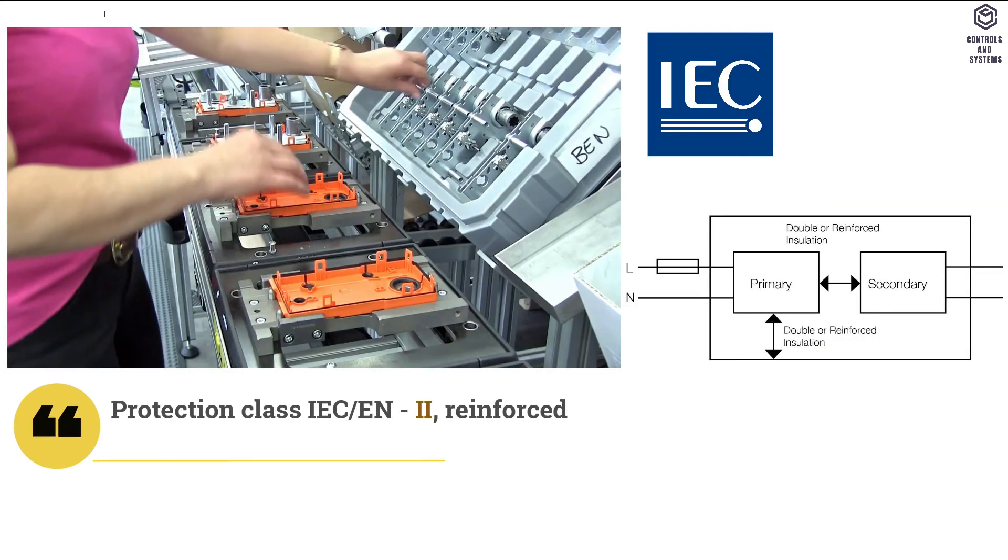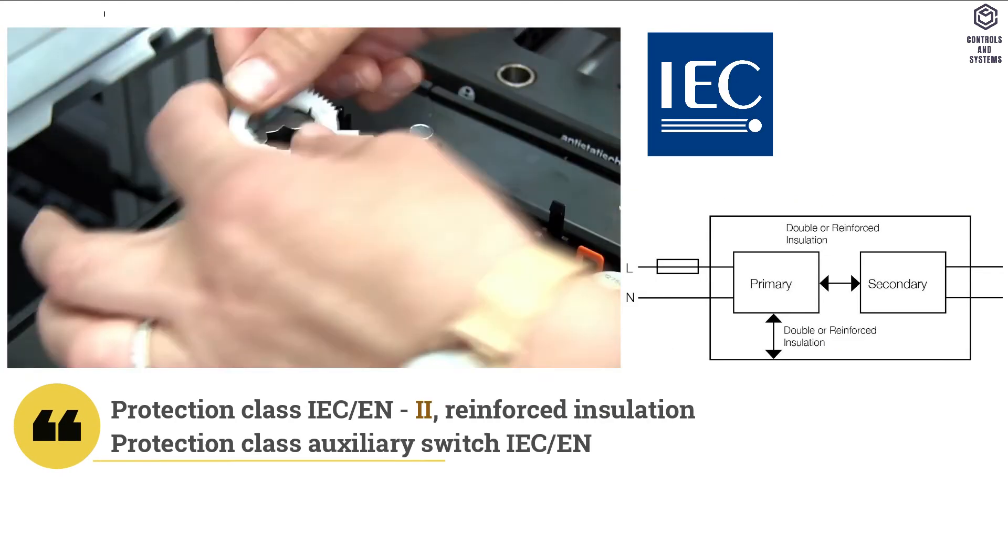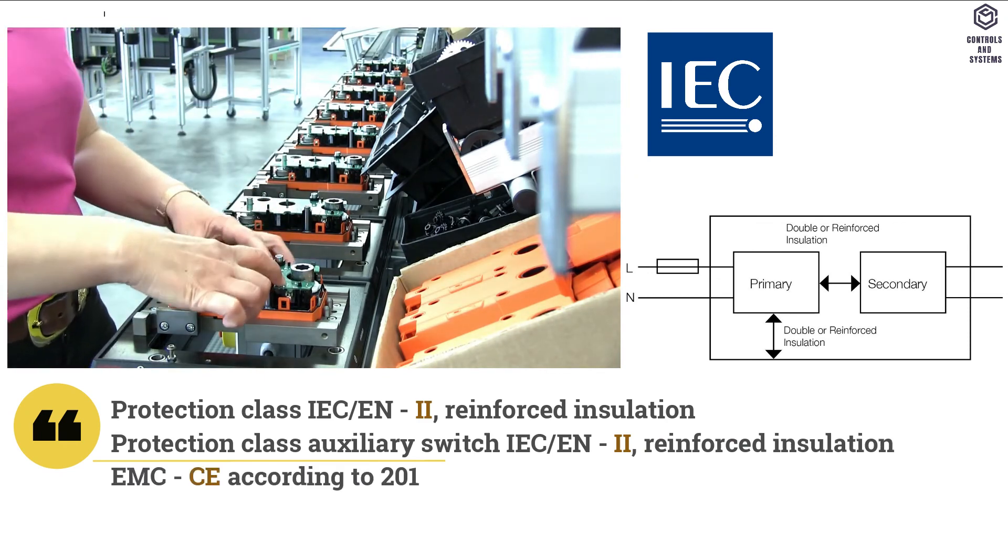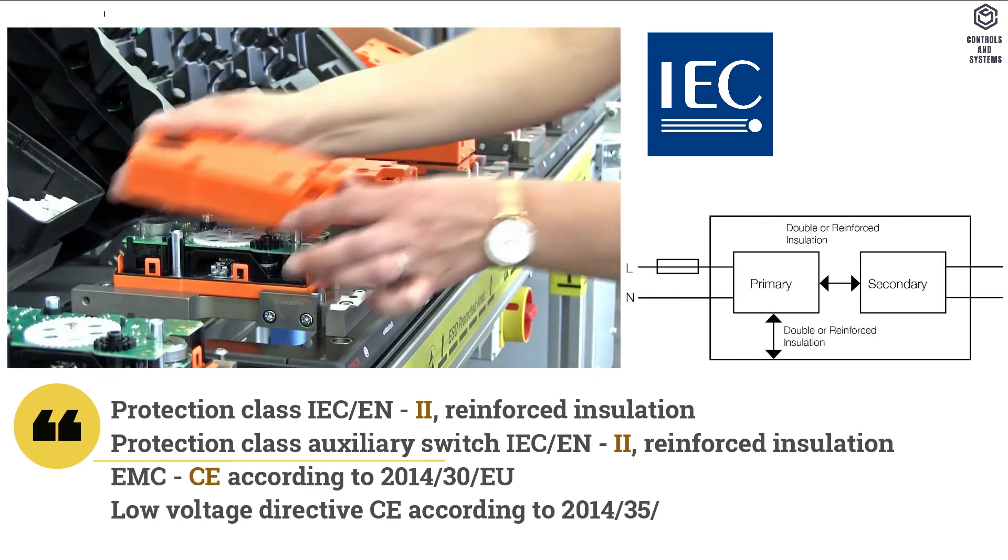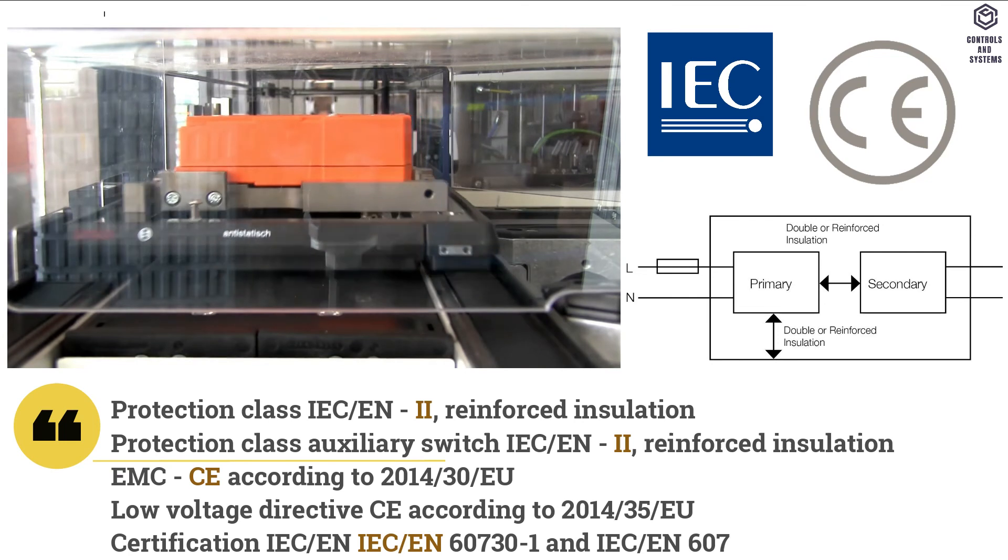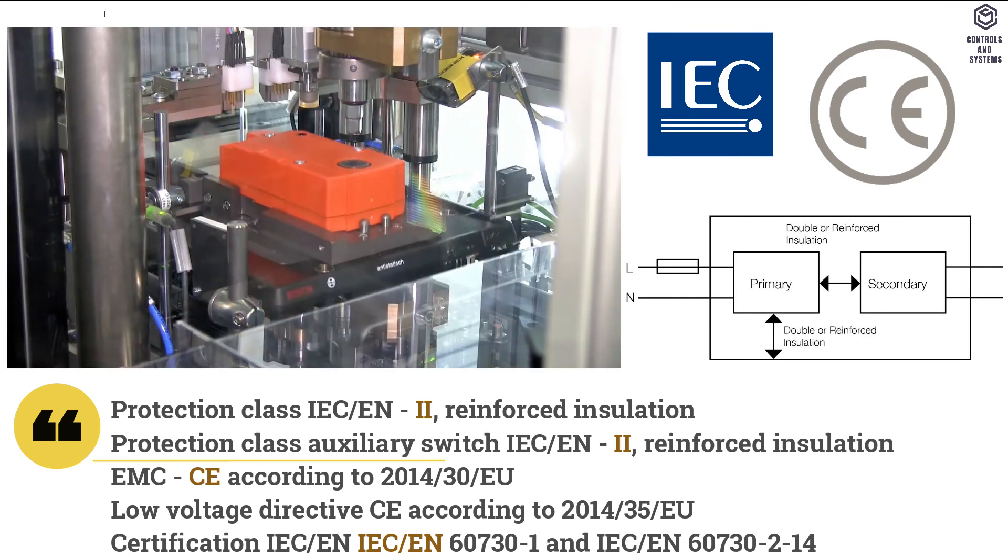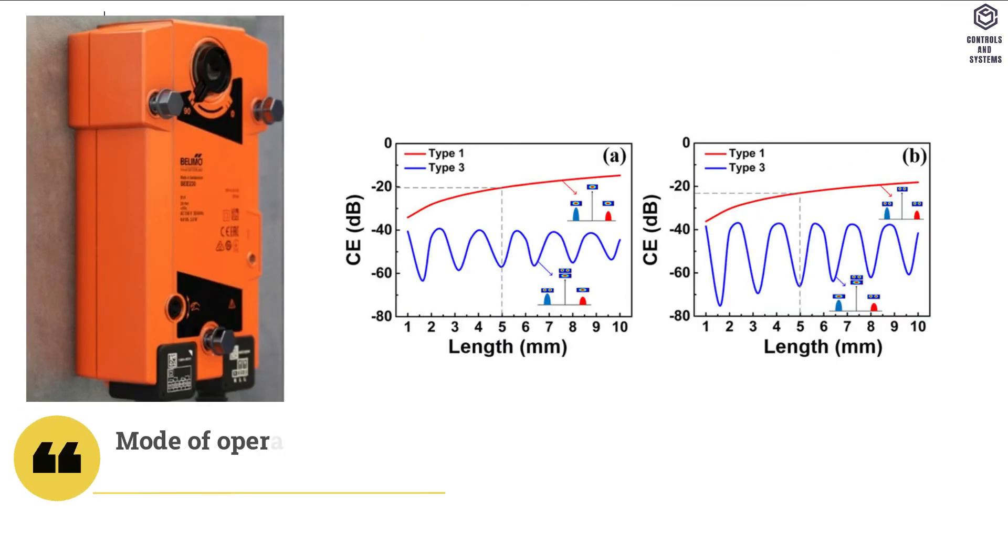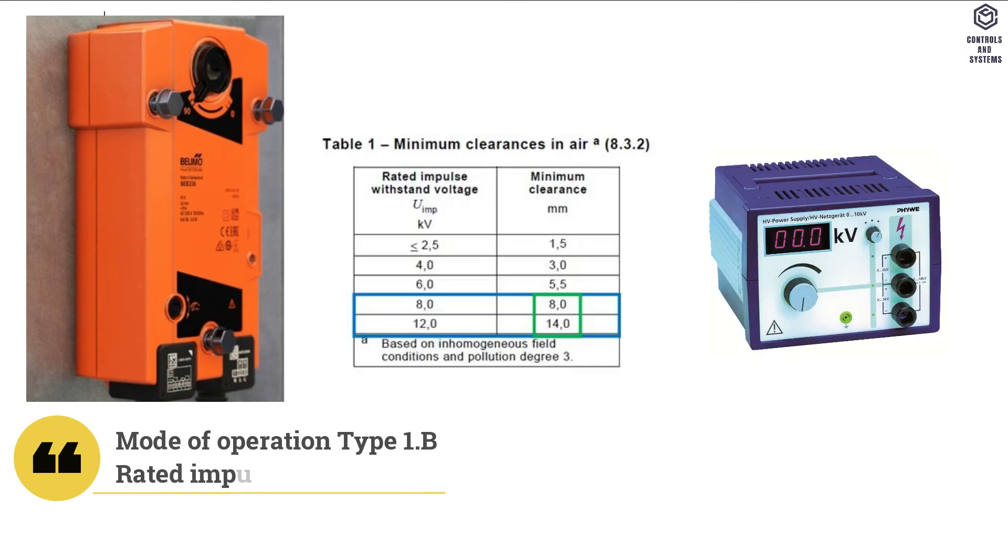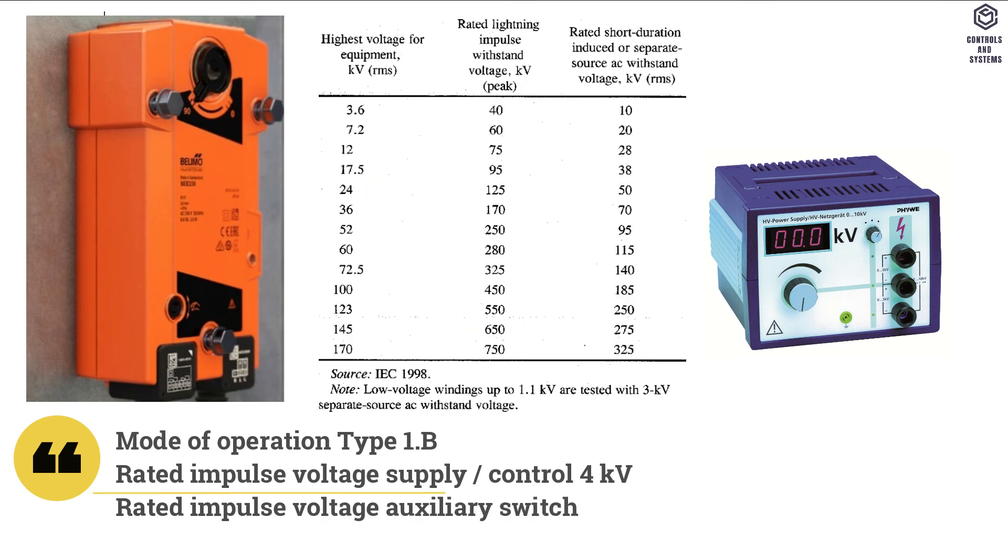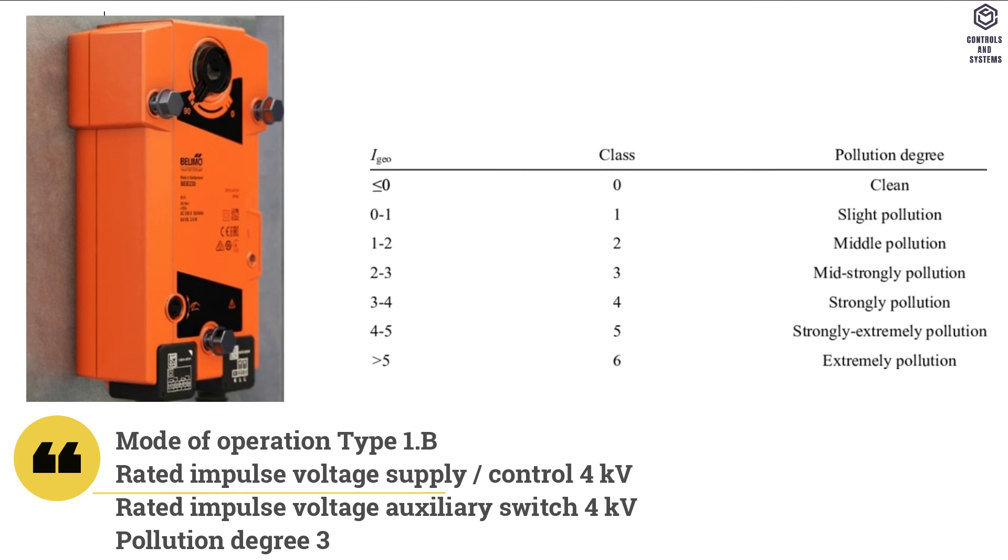Safety data: protection class IEC EN is 2 reinforced insulation. Protection class auxiliary switch IEC EN is 2 reinforced insulation. EMC is CE. Mode of operation is type 1.B. Rated impulse voltage supply and control is 4 kilovolts. Rated impulse voltage auxiliary switch is 4 kilovolts. Pollution degree is 3.